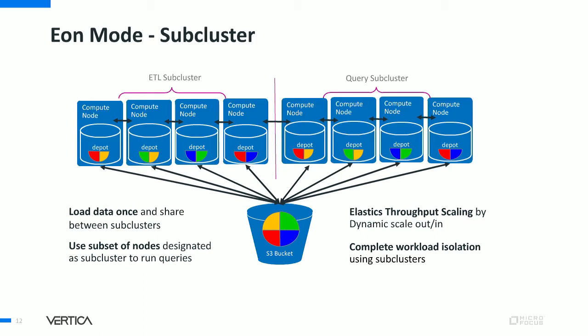One important feature of Eon Mode is the subcluster. Vertica lets you divide your cluster into smaller execution groups. Each execution group has a set of nodes that subscribe to all the shards and can process queries independently. When you connect to a node in a subcluster, that node along with other nodes in the subcluster will only process your query, enabling workload isolation and elastic scale-out without impacting the rest of the cluster.